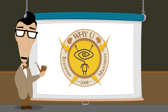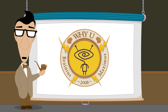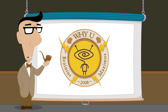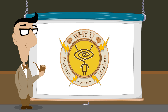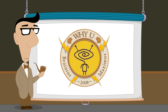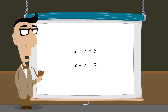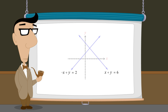Hello, I'm Professor Von Schmohawk and welcome to Why U. In the last several lectures, we studied systems of two linear equations in two variables and saw how these systems could be represented graphically as lines in the Cartesian plane.